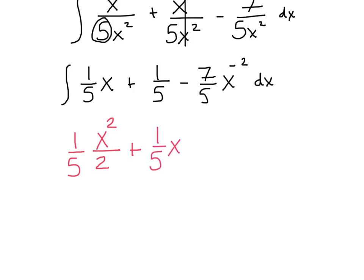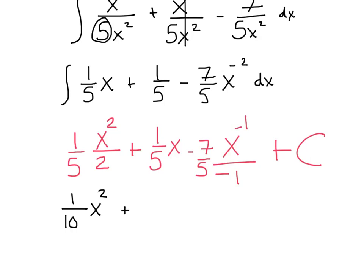If you're not sure, once you integrate, take its derivative and see if it matches. Adding 1 here gives x to the negative 1, divided by negative 1, and don't forget you already have times the negative 7 fifths, plus c. Cleaning up: 1 tenth x squared plus 1 fifth x, plus 7 over 5x, plus c.